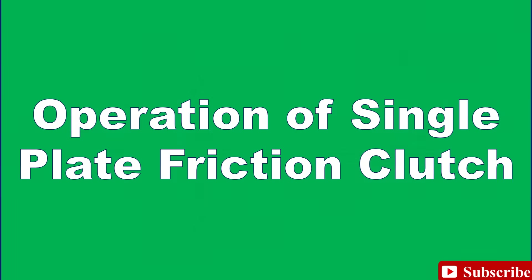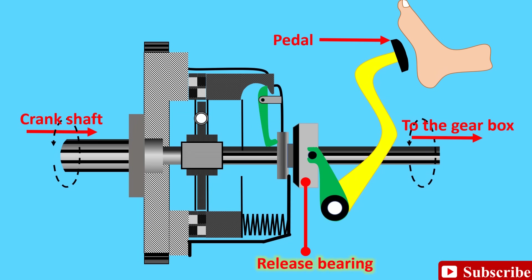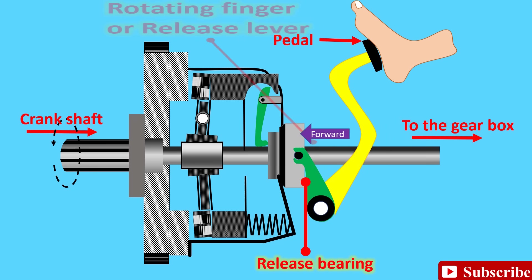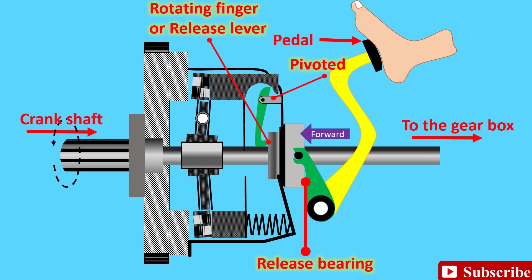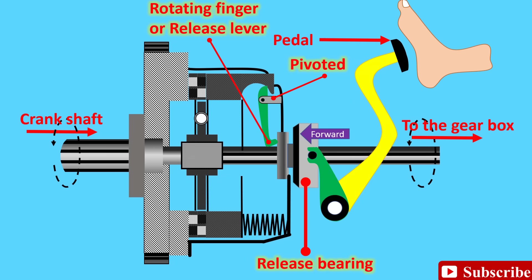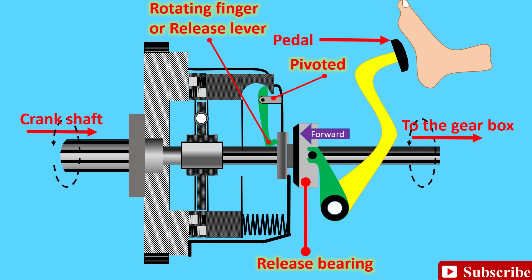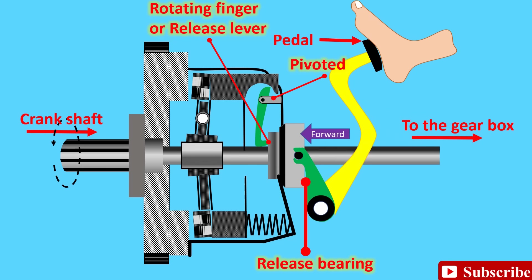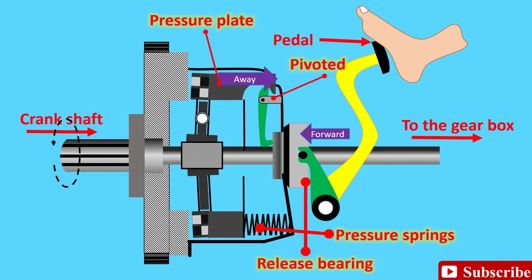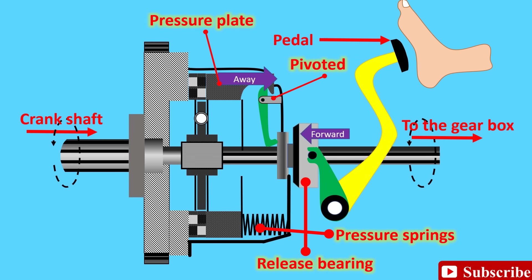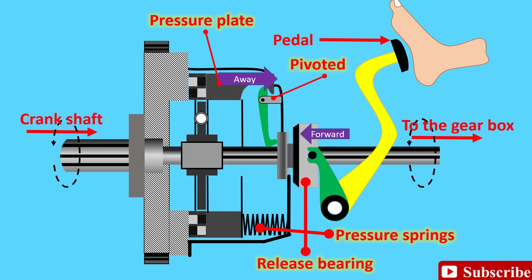Operation of single plate friction clutch: when the clutch pedal is pressed to disengage the clutch, suitable linkage moves the thrust or release bearing forward towards the flywheel to come in contact with the rotating fingers or release lever of the clutch assembly. The release levers are pivoted to the clutch cover with the outer ends connected to the pressure plate. The light pedal pressure and large release bearing displacement towards the flywheel is translated by the release lever into high pressure and small displacement, which opposes the action of the pressure springs. This causes the pressure plate to move away from the clutch plate and flywheel, allowing the flywheel and pressure plate to turn without transmitting power to the clutch plate and clutch shaft. Thus the clutch operation gets disengaged.